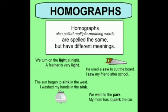For example: 'We turn on the light at night' — here light means a source of brightness. 'A feather is very light' — here light refers to weight. Then: 'He used a saw to cut the board' — here saw is a tool, whereas 'I saw my friend after school' — saw is the past tense of 'see'.